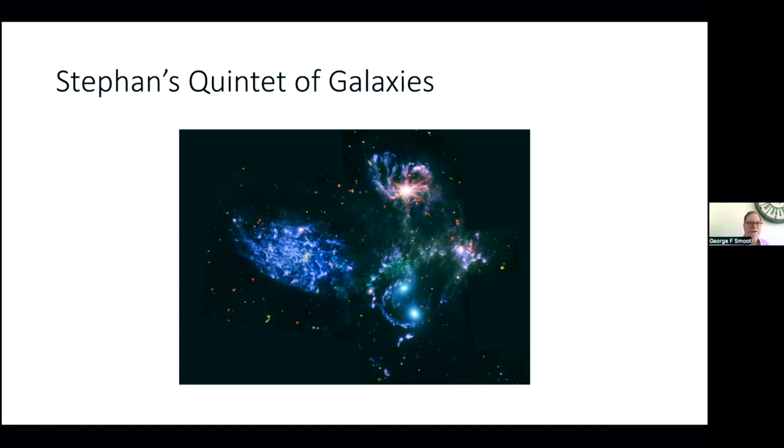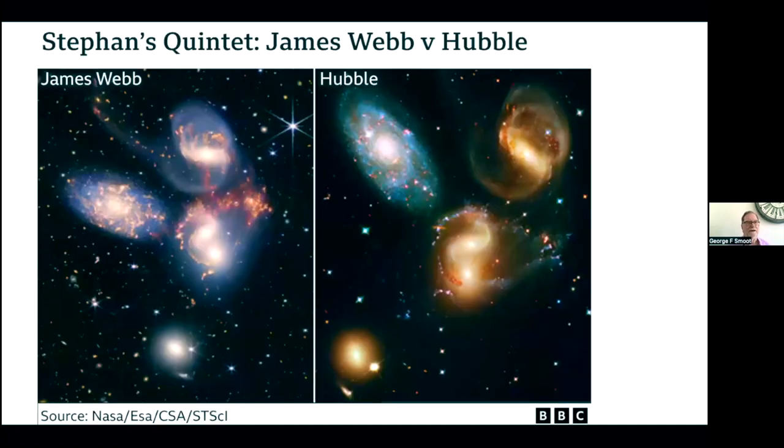And here is the James Webb picture, and on the right is the Hubble picture. You can see the slightly greater resolution. But you can see the extra kinds of things you can see. You can see the dust that's been heated, you can see where the stars are forming more actively. And you look around the background, you see more stars and galaxies in the background of the picture.